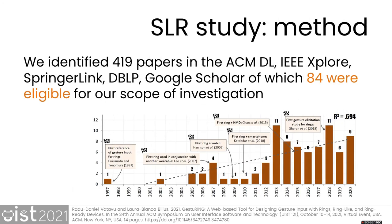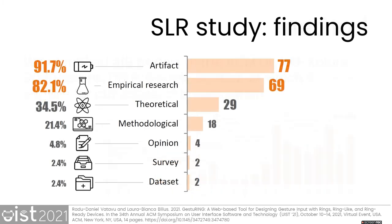For our systematic review, we followed best practices from the literature and identified more than 400 papers in several scientific databases. Of these, 84 papers met our requirements for gesture input with ring devices. We found that most of the contributions from the literature were about artifacts, such as new ring devices that were often accompanied by empirical results from user studies and evaluations. We also found two datasets and two survey contributions.